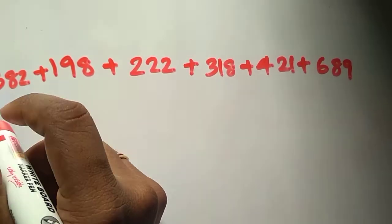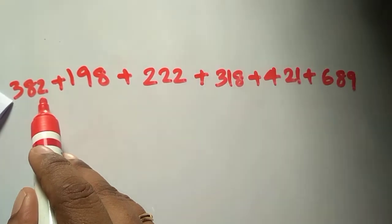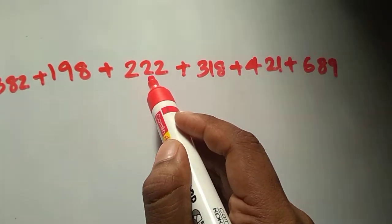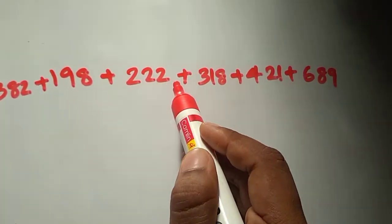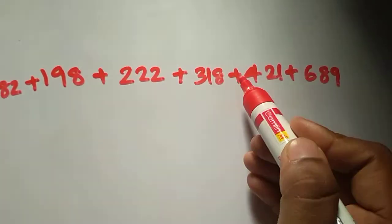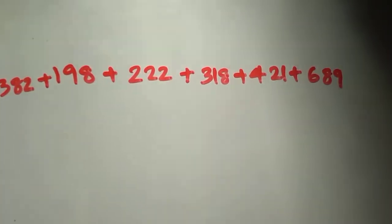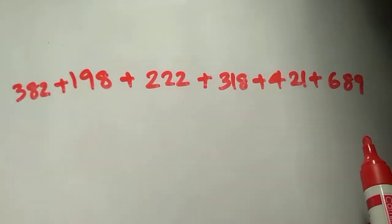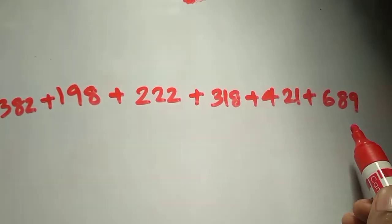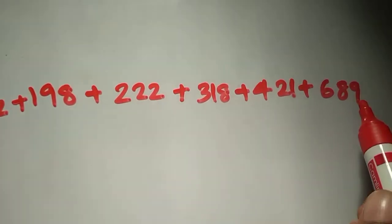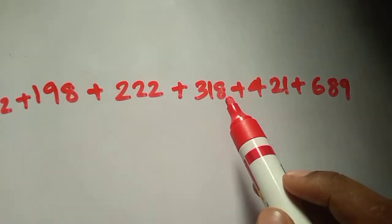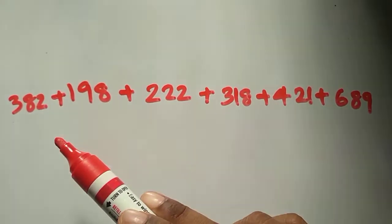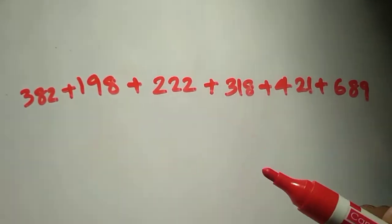The numbers are 382, 198, 222, 318, 421, and 689. Now we check the 1's places: 9, 1, 8, 2, 8, 2.